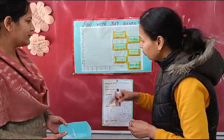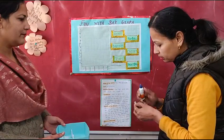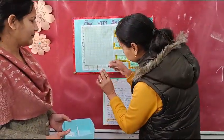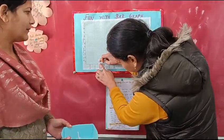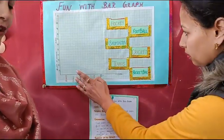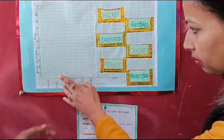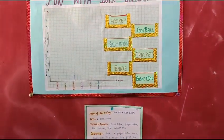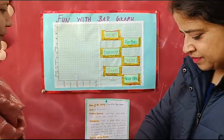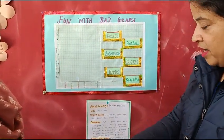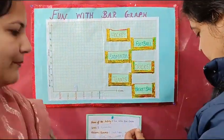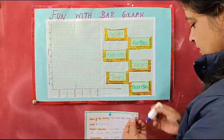So I will put one unit in this. Similarly, the teacher will call another student to represent his favourite game. Amrit, please come and select your favourite game and put a unit in front of it. I will select tennis — 2 units, 1 unit — paste it with the help of glue.